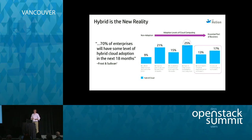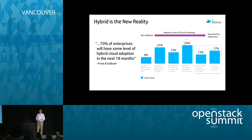Almost 30% of all enterprises in a Frost & Sullivan survey of about 600 different companies are either treating cloud as crucial to their business or already starting to run a percentage of workloads on cloud. So this is a technology that is rapidly being adopted, enterprises are using it, and they are using it in a hybrid manner.